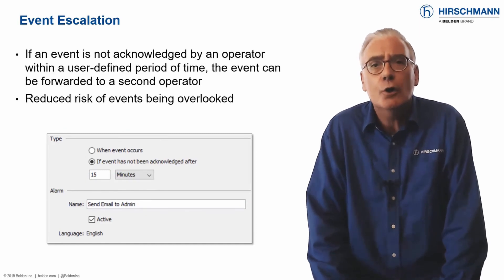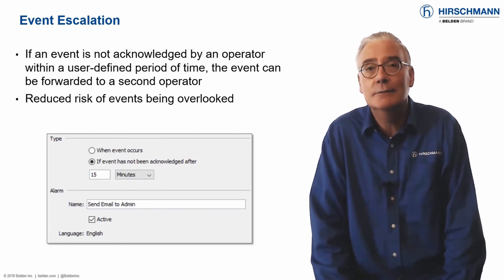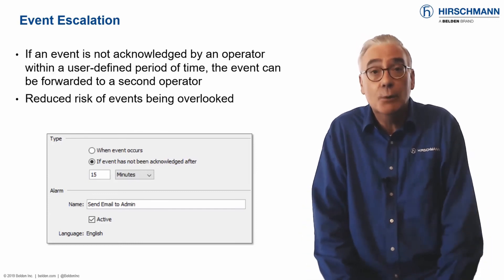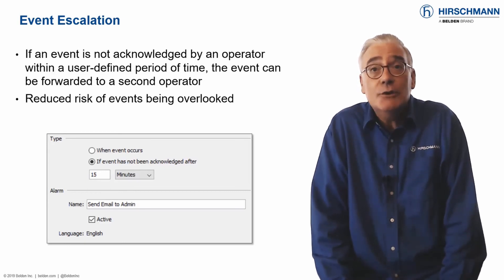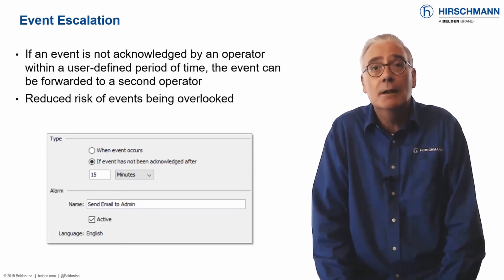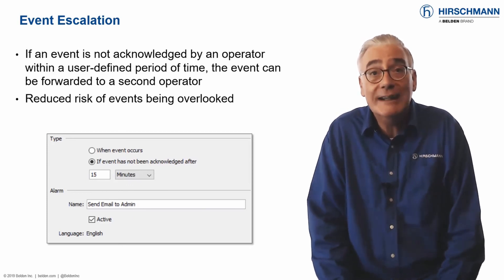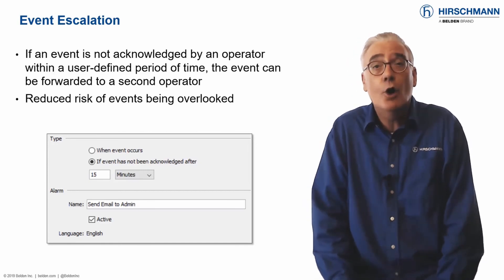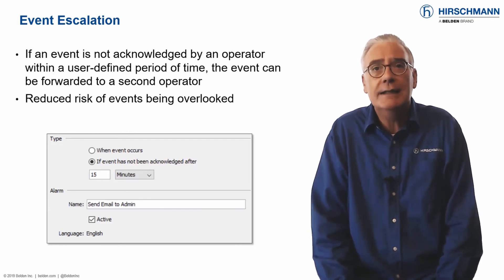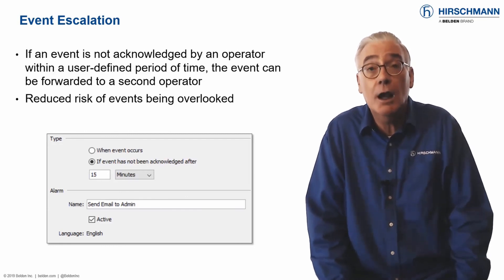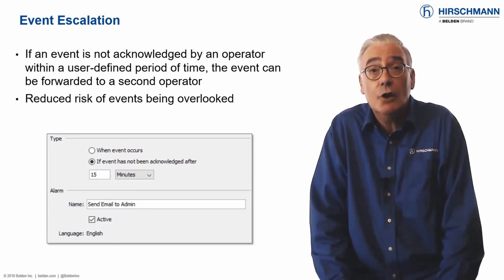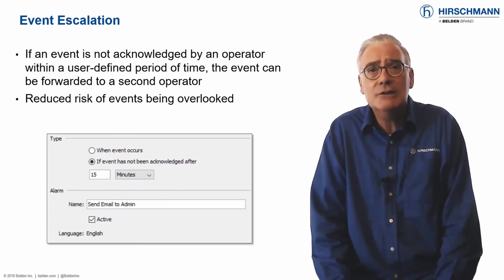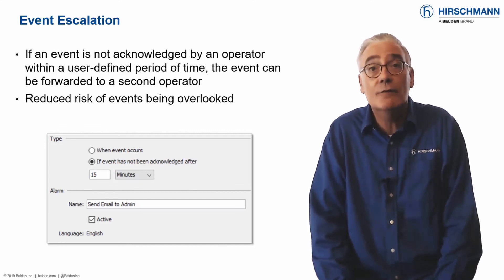In a perfect world, your network operators would see and acknowledge every event. In reality, sometimes operators will be focused on other tasks and events will get missed. Industrial HiVision offers a simple function to mitigate this problem. Unacknowledged events can be redirected to an alternative operator or escalated to you. You can define the acknowledgement timeout period per alarm — for example, the higher the event severity, the shorter the acknowledgement period. You can also define how each event should be escalated. Event escalation reduces the chances of events being missed and helps you and your colleagues maintain awareness of the network status.